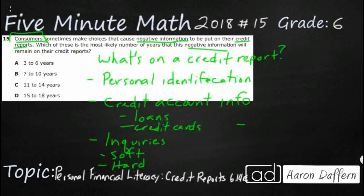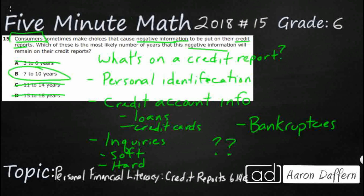And finally, if it ever gets really bad, if you have a bankruptcy — that's when you have to file because you are running out of money and it involves the courts — that is going to stand on that credit report. The question is, how long does this stay? Well, it would be really nice if it only stayed three to six years. And if it stayed 15 to 18 or even 11 to 14 years, you would never be able to overcome anything. Your negative information stays on your credit report between seven to ten years. So even if you get something really bad like a bankruptcy, it is not forever. And our answer is B.